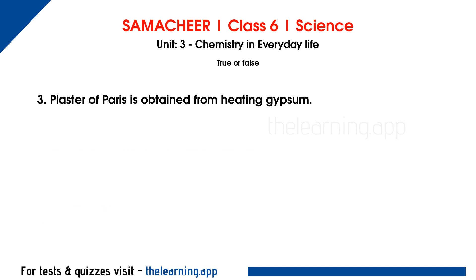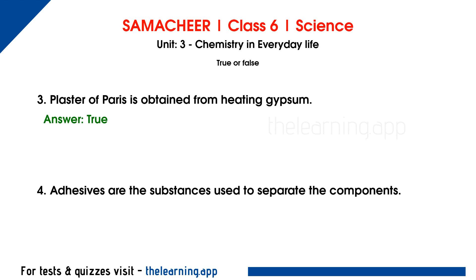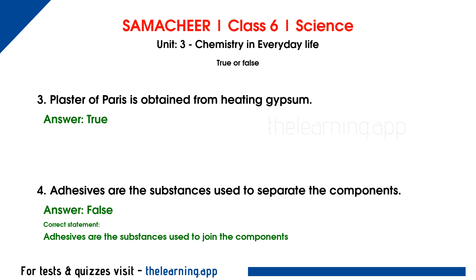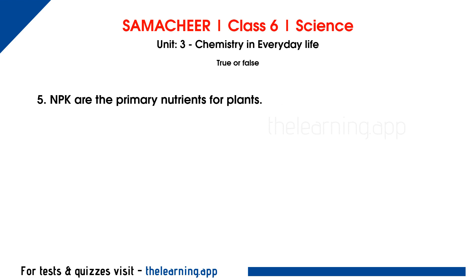Question 3. Plaster of Paris is obtained from heating gypsum. Correct answer is True. Question 4. Adhesives are the substances used to separate the components. Correct answer is False. Correct statement: Adhesives are the substances used to join the components.